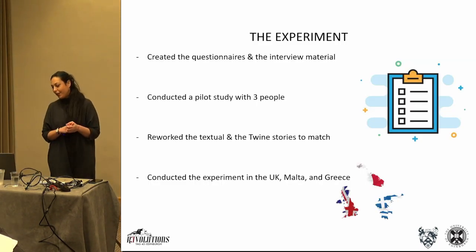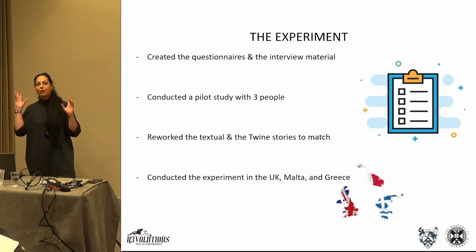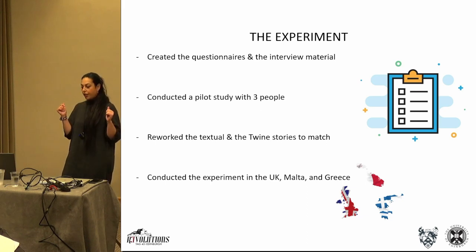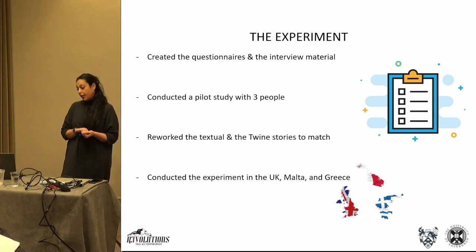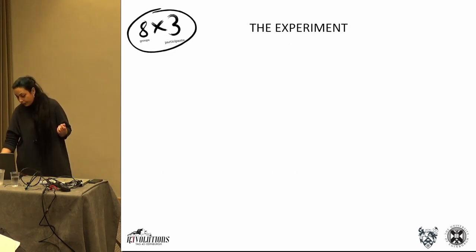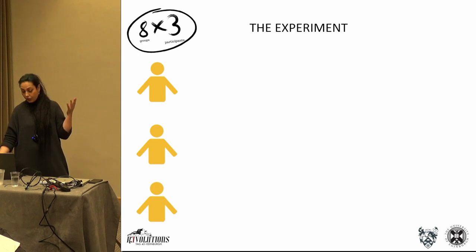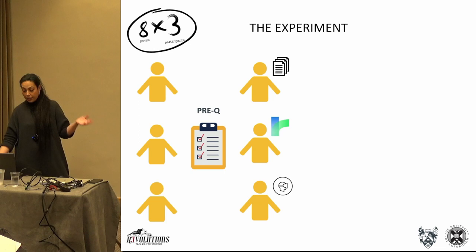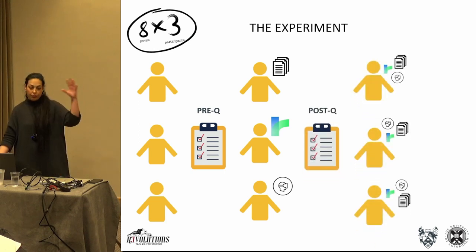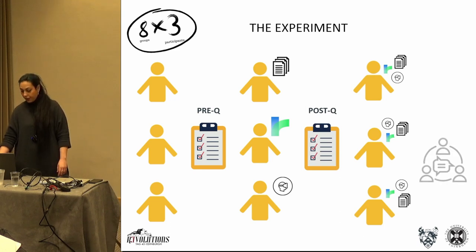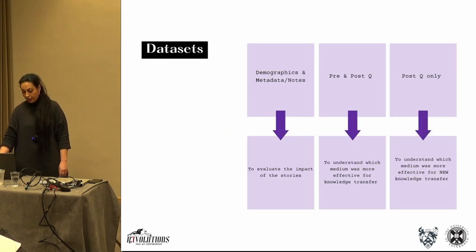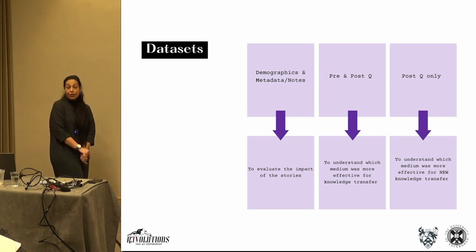I then created an experiment to test the media on actual people. I designed a pre-questionnaire, post-questionnaire, and an interview. I ran the experiment in three countries: the UK, Malta, and Greece. Three participants at a time completed a pre-questionnaire, then each experienced one of the media followed by a post-questionnaire, then rotated to experience all three. Then everyone gathered for a group discussion. I ended up with three datasets.